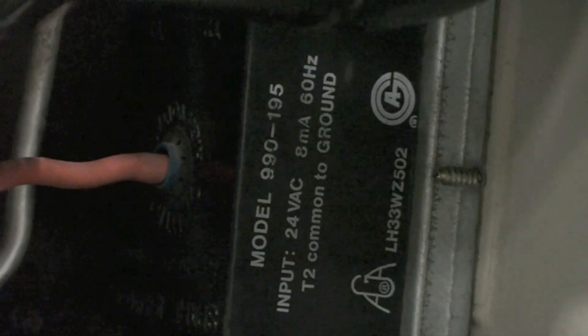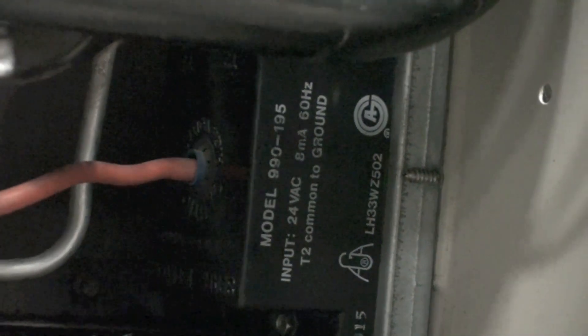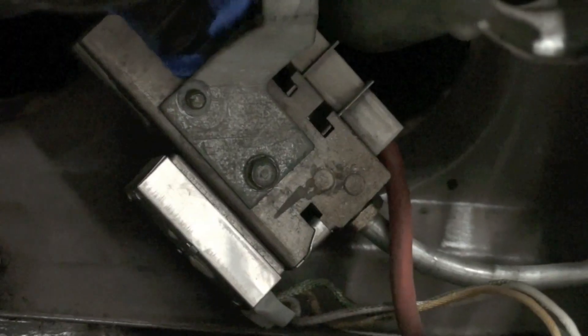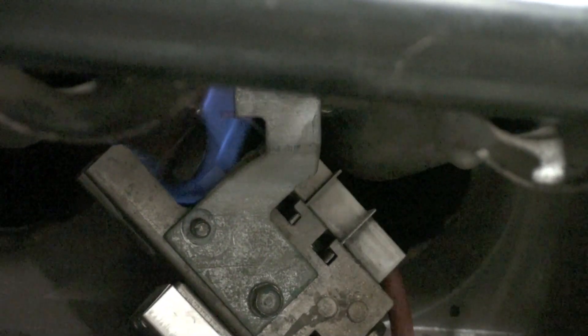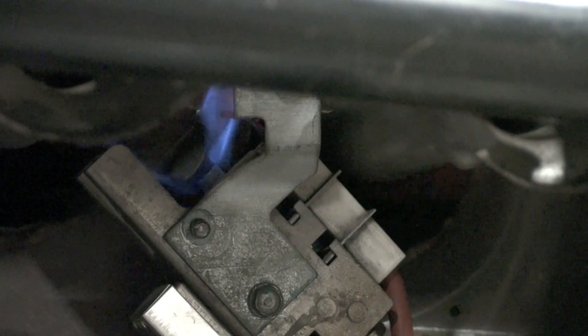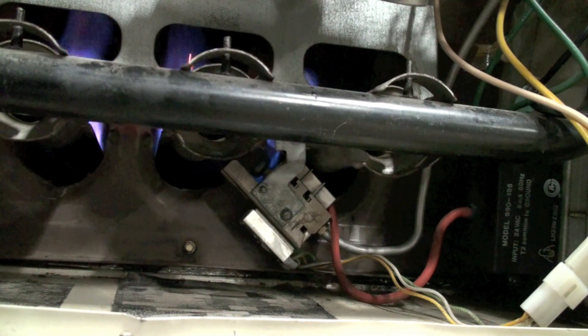You can see this is your igniter. It's an electronic box—24 volts comes into it, high-tension lead comes out. The pilot is still warming... there we go, the main gas is on and it has lit.